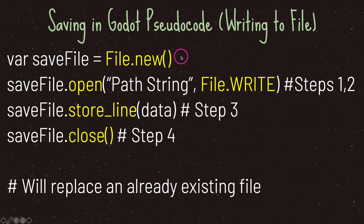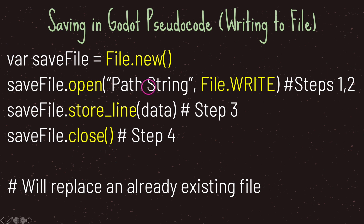This is pseudocode. First we need to create an instance object of the File class using File.new(), stored in a variable called save_file. From our file class variable we use the open() method, which takes two arguments: the first is a file path as a string, and the second is an enum value representing the type of file stream we want. Because we're saving a file we want to write, and so in one line of code we've already completed steps one and two.